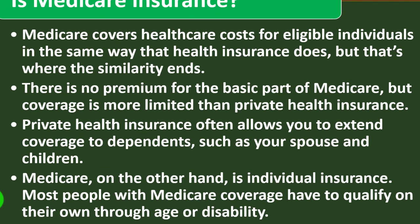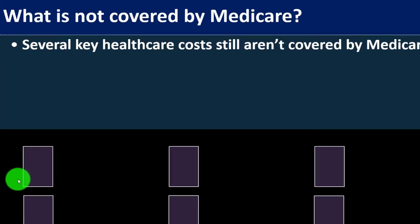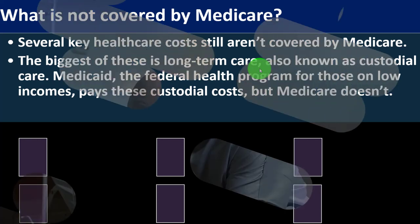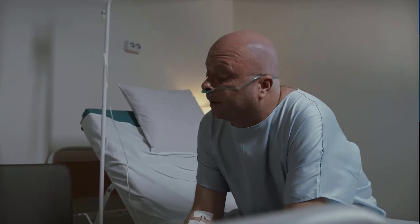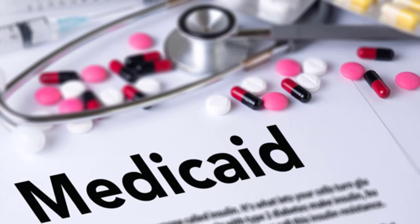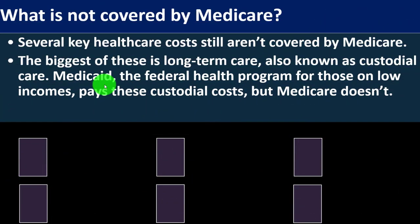Medicare, on the other hand, is individual insurance. Most people with Medicare coverage qualify on their own through age or disability. Several key healthcare costs are still not covered by Medicare. The biggest is long-term care — also known as custodial care — which is becoming more of an issue as we live longer. Medicaid pays custodial costs for those with low incomes, but Medicare doesn't. To qualify for Medicaid's long-term care coverage, your income must be below a certain threshold.